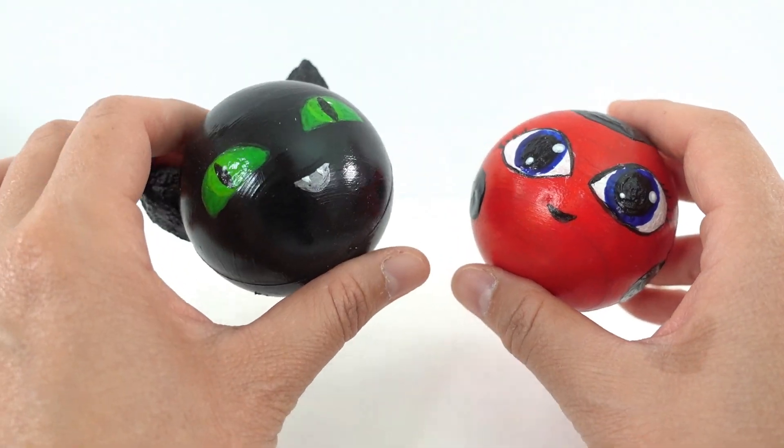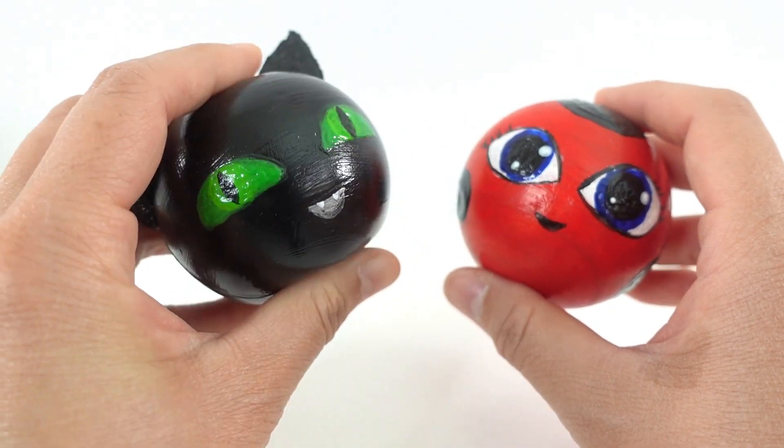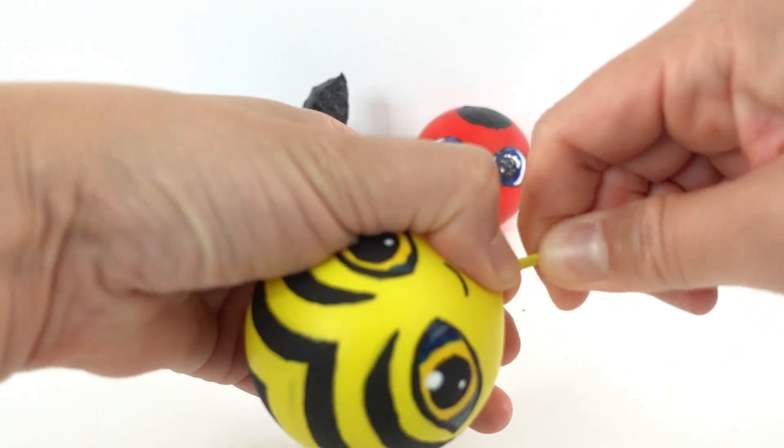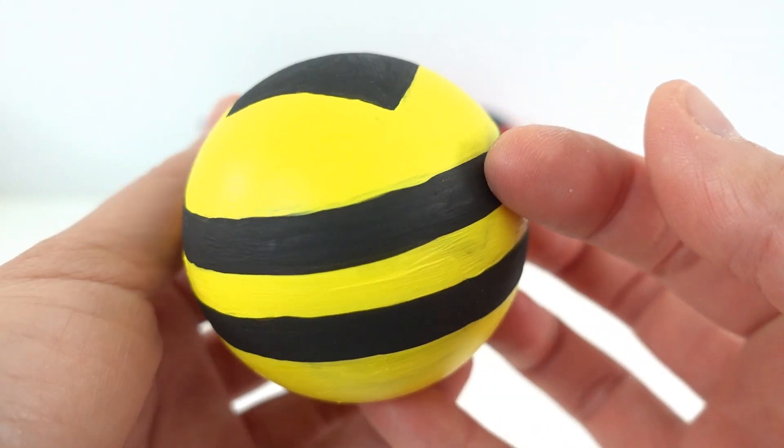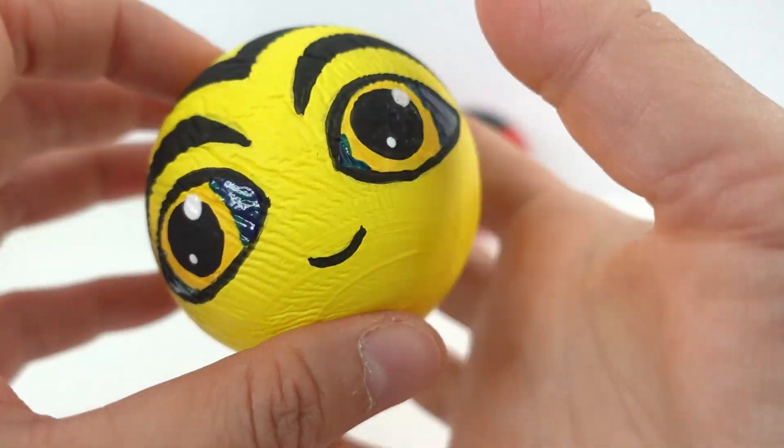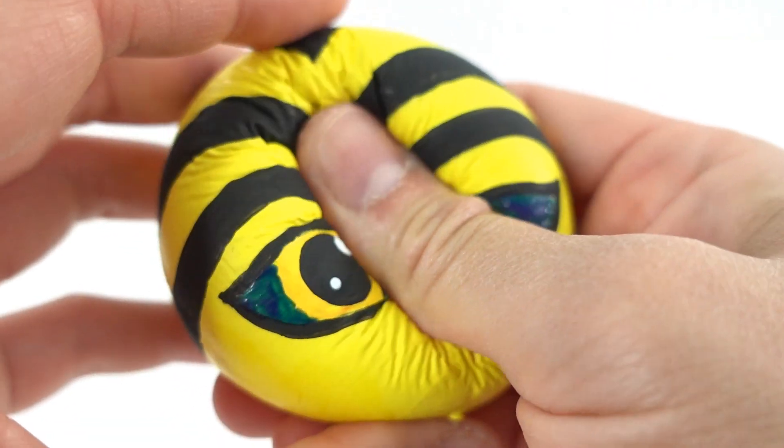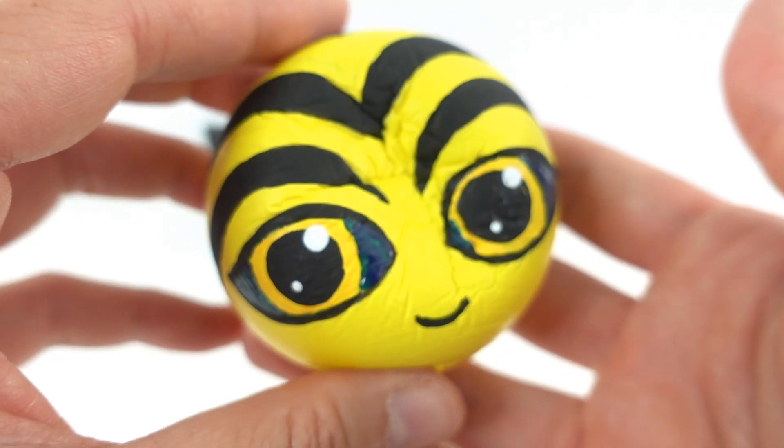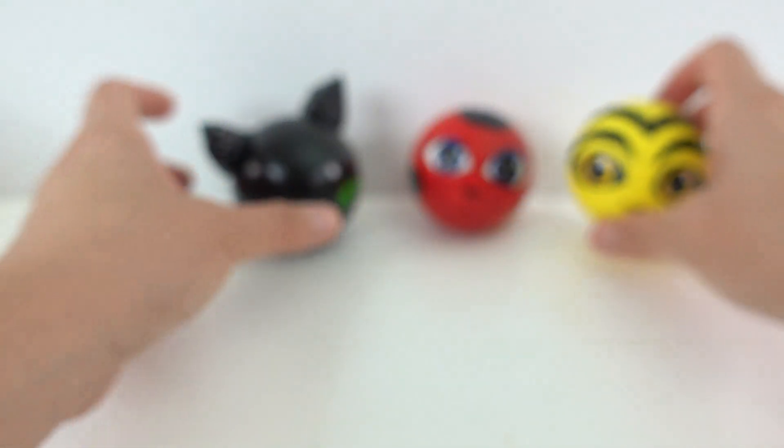Alright everyone, so we're done. Here are the first two squishies that we made - we have Plagg here and we have Tiki. Here's Pollen. Let's take her off the stick. Oh, look at this. Isn't this cool? Give it a little squeeze. That is so fun. Just look at that. I think Pollen turned out really, really good.